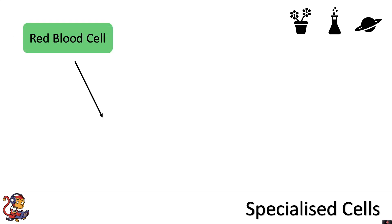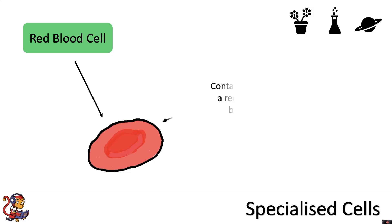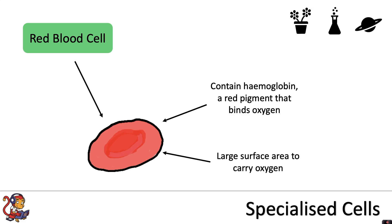Still keeping with the animal cells, we've also got the red blood cell. This contains haemoglobin, a red pigment that binds oxygen. It has a large surface area to carry oxygen and it also has no nucleus.